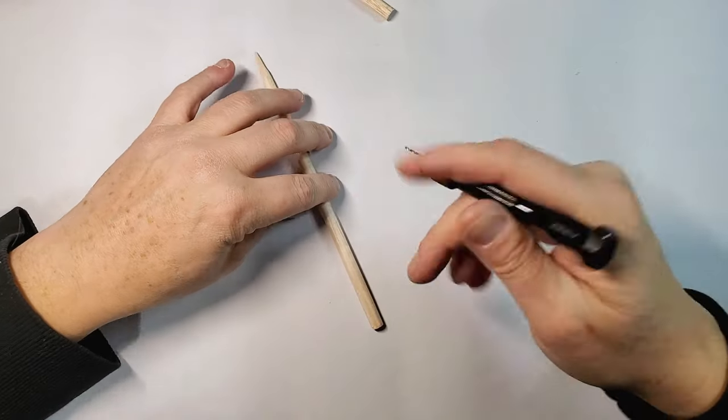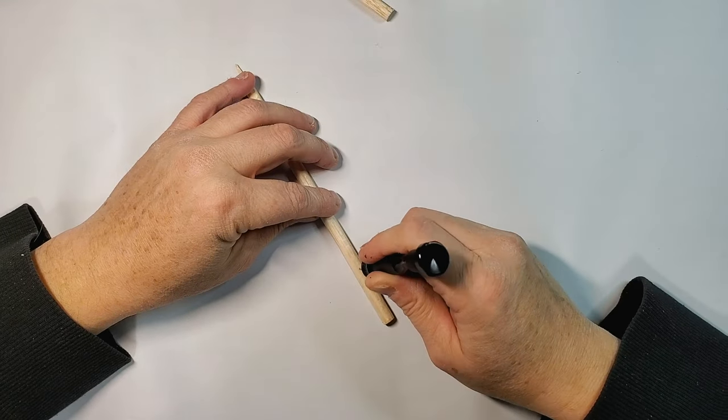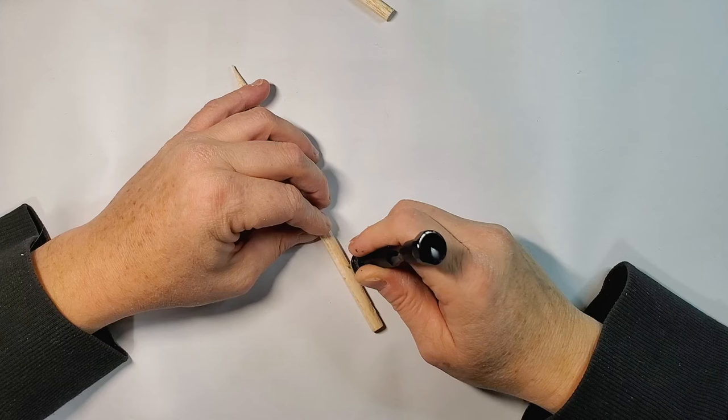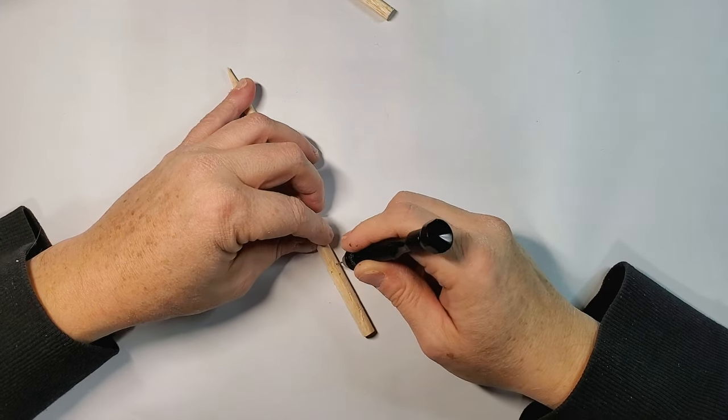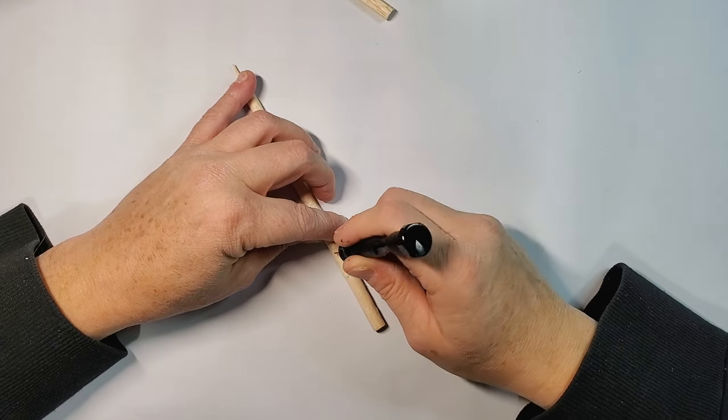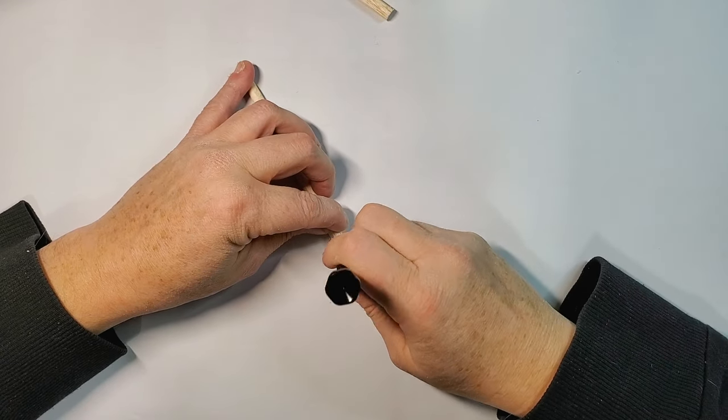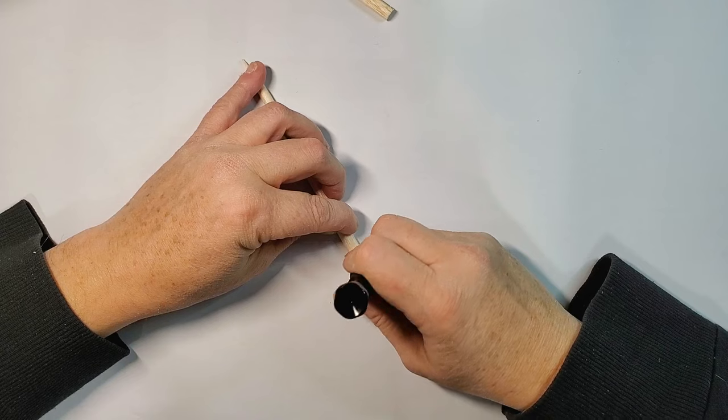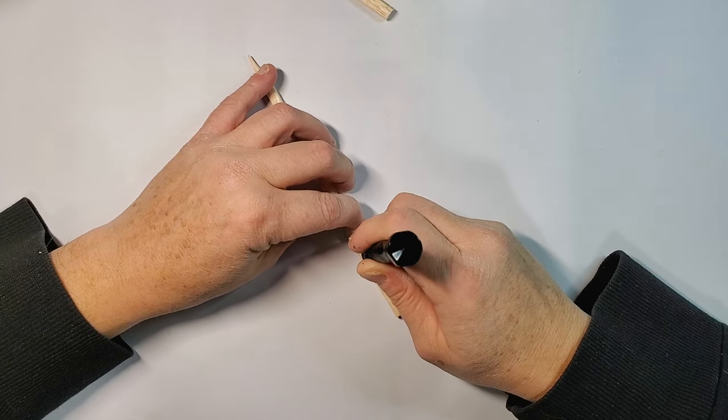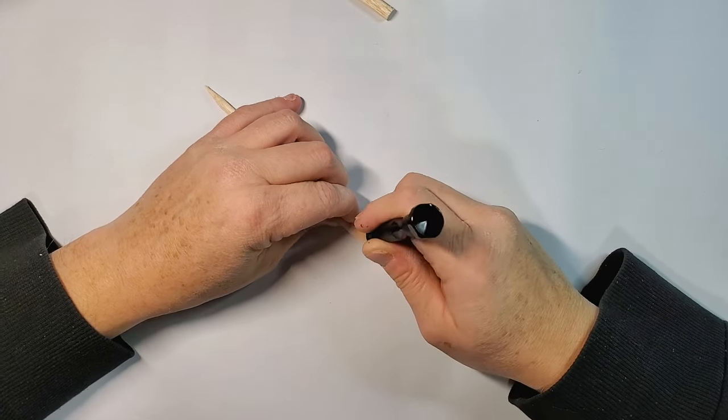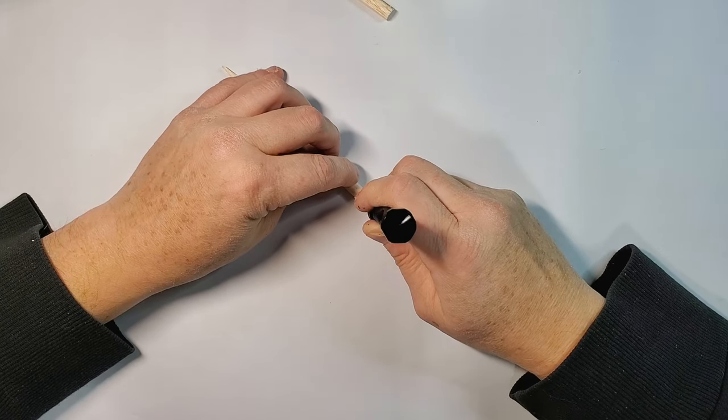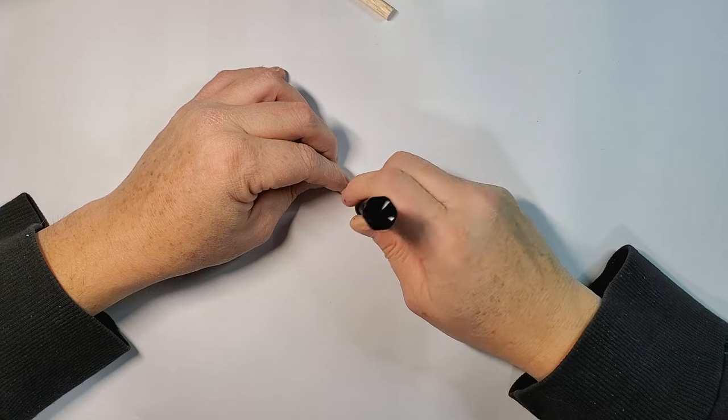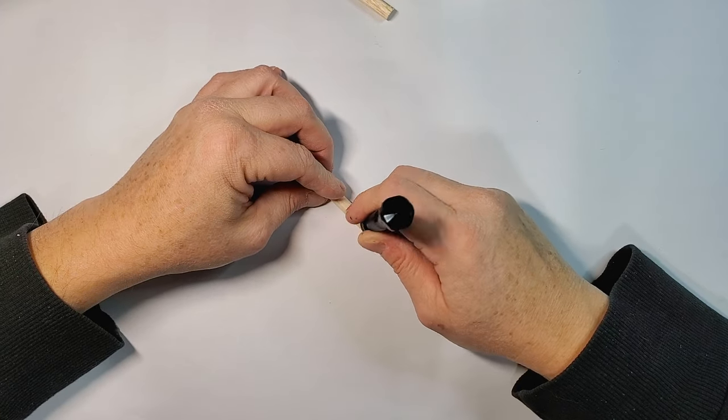The next step will be to drill some holes in your tree trunk. I'm using just a really small drill bit, maybe one millimeter, to make sure that you basically drill some holes all around your tree trunk. This way you're going to be able to fit all the branches that we will do a little bit later.